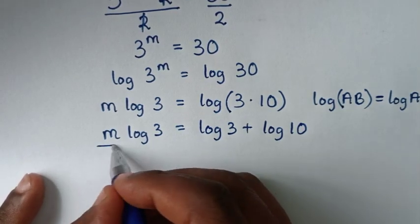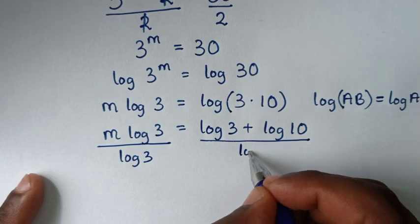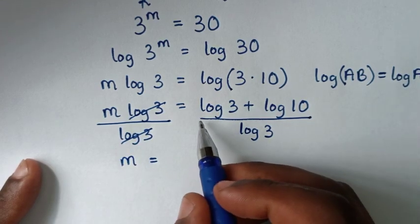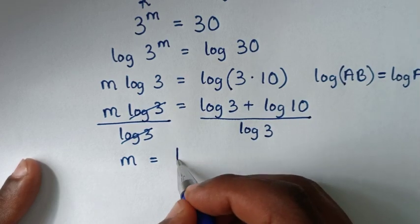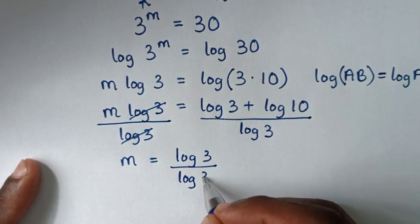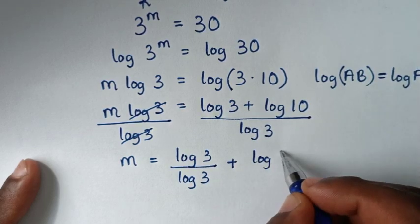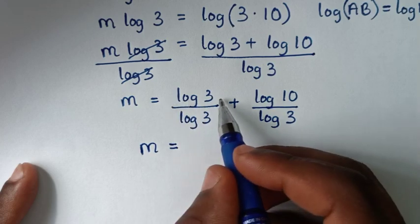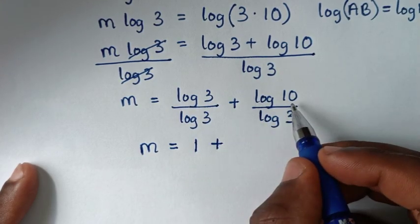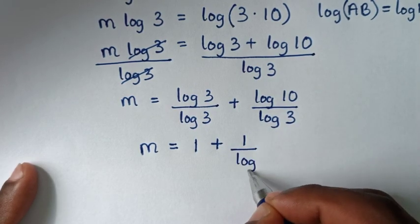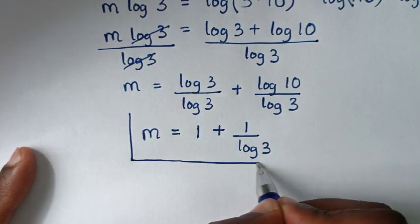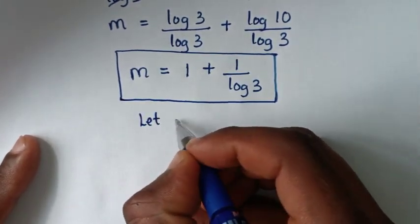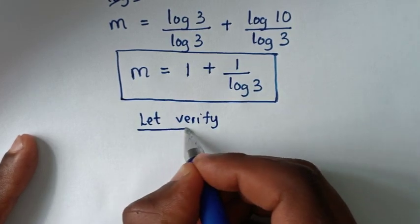From here we divide both sides by log of 3. The log of 3 cancels on the left, giving m equal to log of 3 over log of 3 plus log of 10 over log of 3. So log of 3 over log of 3 is 1, and log of 10 is 1, giving us 1 plus 1 over log of 3 as our final answer.